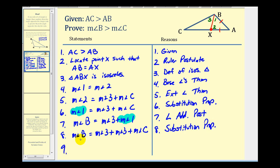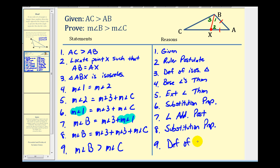Now we have enough information to prove the measure of angle B is greater than the measure of angle C. Because in order for these to be equal, notice how we have to add the measure of angle three twice to the measure of angle C. So the measure of angle B must be greater than the measure of angle C. This is by definition of greater than. I hope the flow of this proof makes sense and I hope you found it helpful.